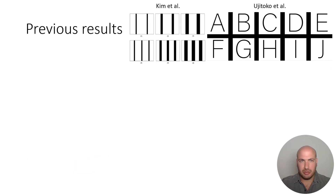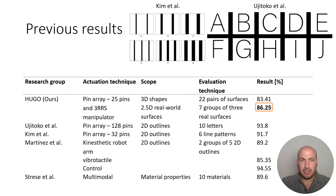The comparison to previous studies is not straightforward, as every device was tested on a different set of surfaces. However, most were tested on synthetic 2D outlines, ranging from simple lines to more complicated shapes. This table shows that the results obtained with Hugo are in the same ballpark as previous studies, while being tested on complex real-world surfaces.